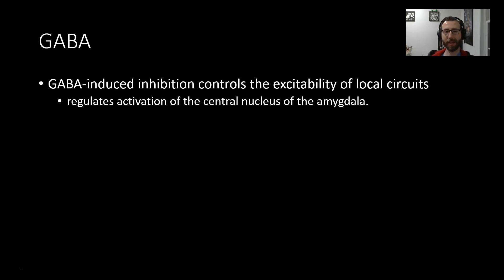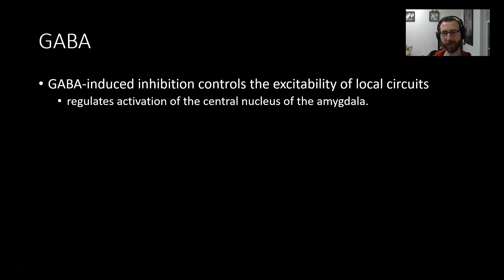GABA-induced inhibition controls the excitability of local circuits. GABAergic interneurons are very common. In particular, this type of signaling regulates activation of the central nucleus of the amygdala, which we talked about previously being important for the mediation of fear and anxiety-like responses.